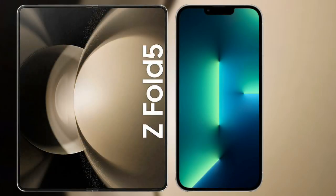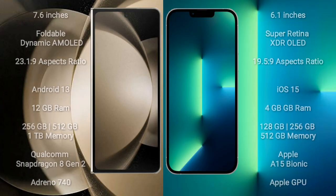I will compare the new Samsung Galaxy Z Fold 5 with iPhone 13. Samsung Galaxy Z Fold 5 comes with a 7.6 inches foldable dynamic AMOLED display and aspect ratio 23.1:9. iPhone 13 comes with a 6.1 inches Super Retina XDR OLED display and aspect ratio 19.5:9.